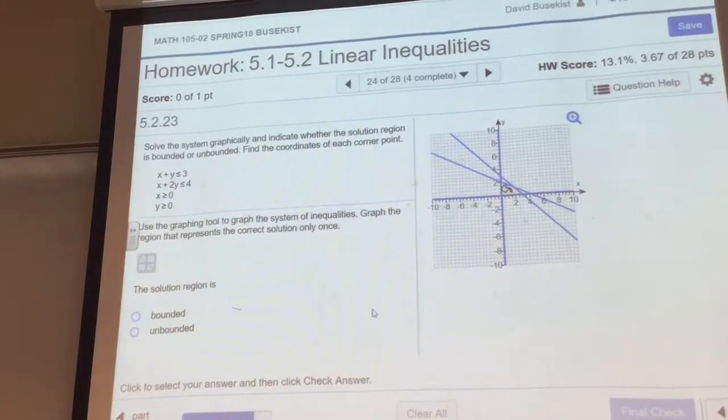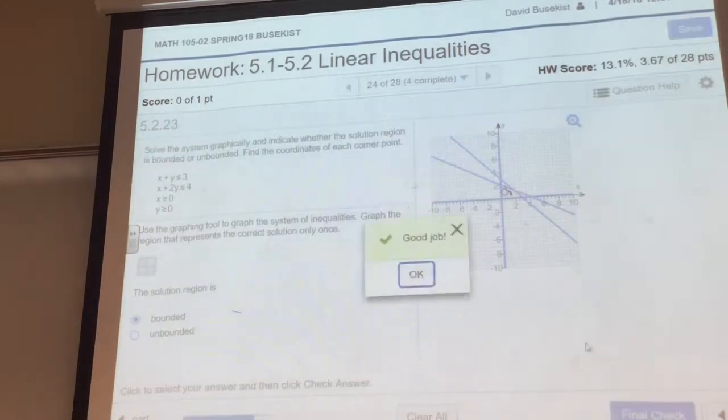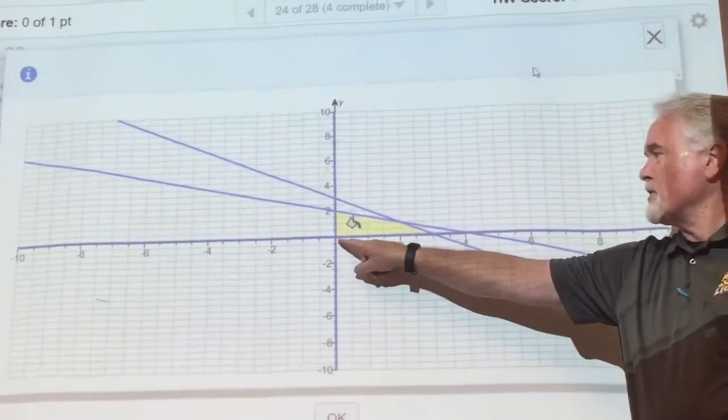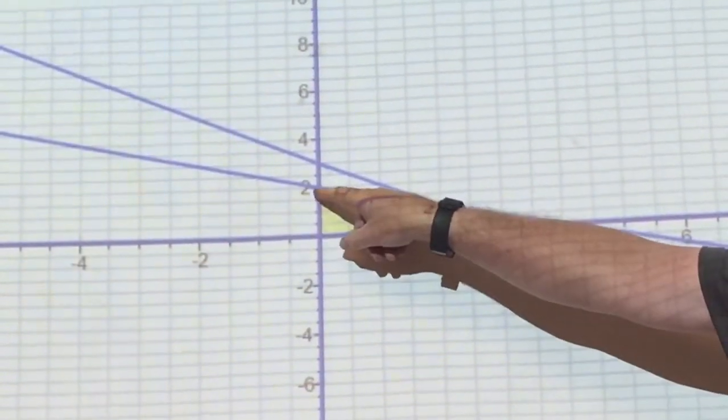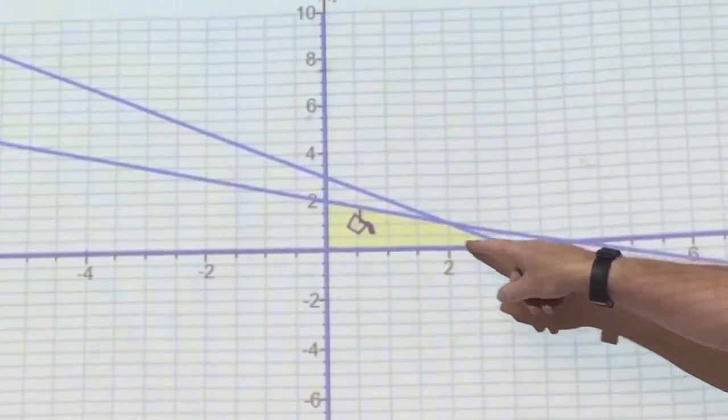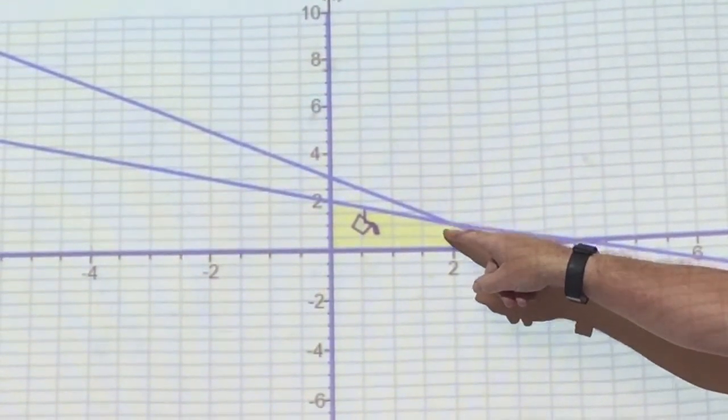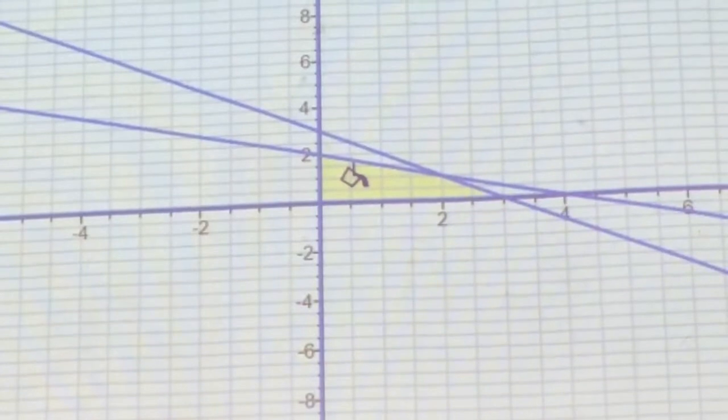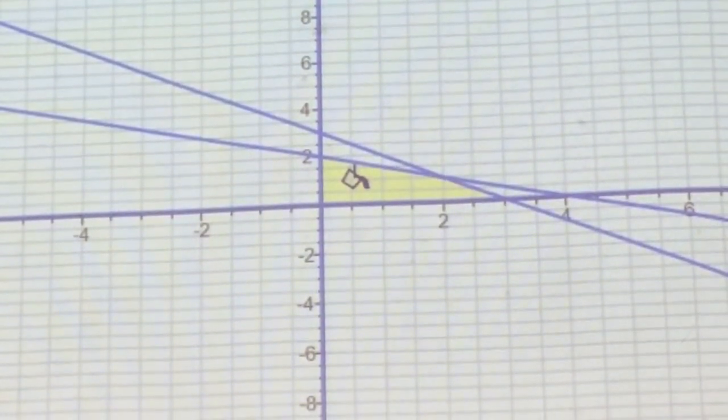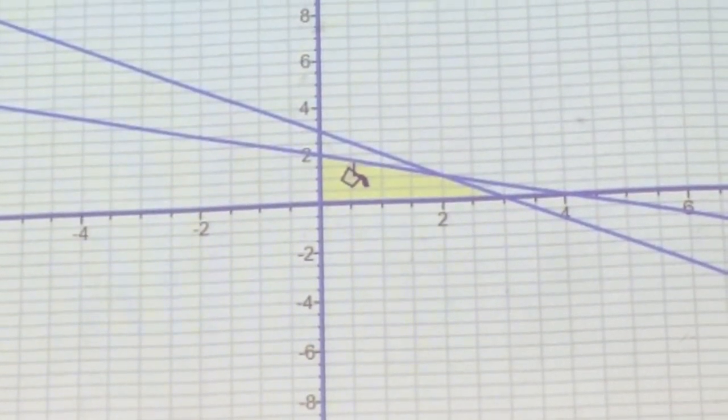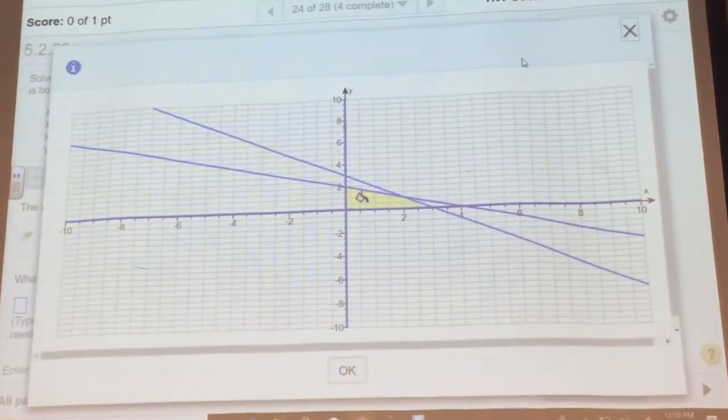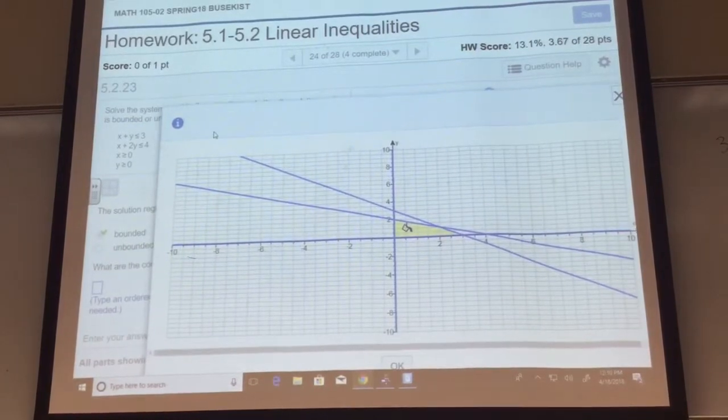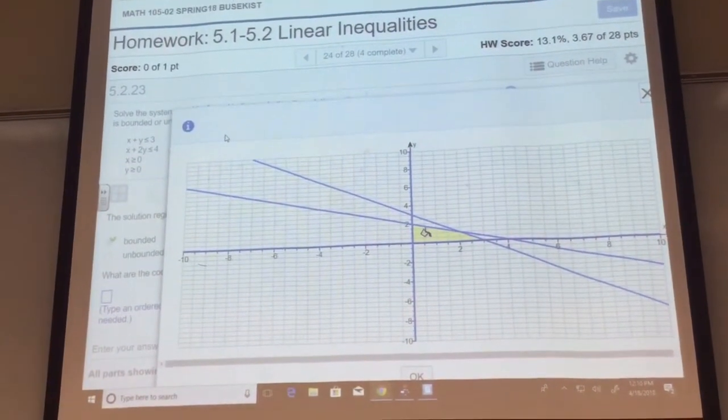Now is that a bounded region? Sure is. How many corner points does it have? (0, 0). (0, 2). (3, 0). You might be able to read it from the graph, but if you can't read it from the graph, how are you going to find this corner point? You do have a system, don't you? Can't see the system now. We do have a system, don't we? x + y = 3 and x + 2y = 4.